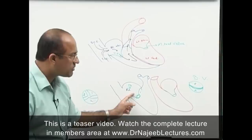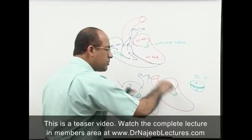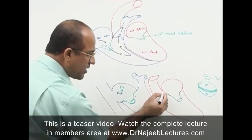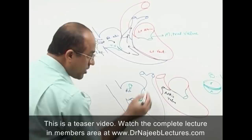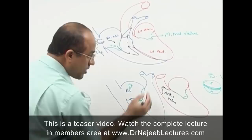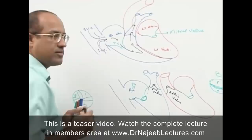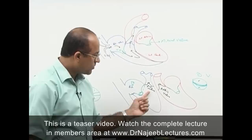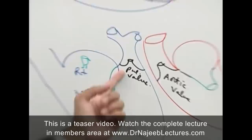The mitral and tricuspid valves are the input valves into the ventricles. The output valve from the left ventricle — where blood goes to the aorta — is called the aortic valve. The valve from the right ventricle to the pulmonary artery is called the pulmonary valve. So the output valves from the heart are the aortic valve on the left side and the pulmonary valve on the right side.